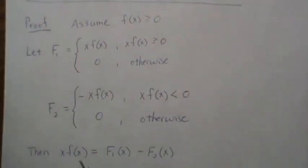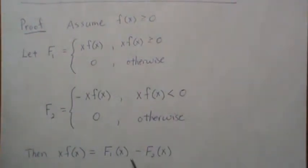When we define them like this, that means if we take x times f of x, it can be written like this. When we're positive, this one's zero, and when this one is zero, this one has value. But since we're forcing F2 to always be positive, then this function can be rewritten as this difference.